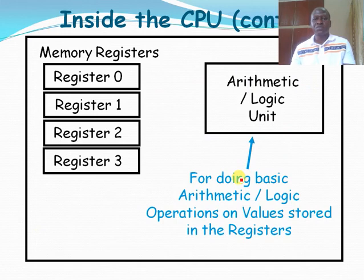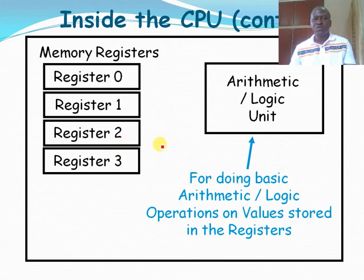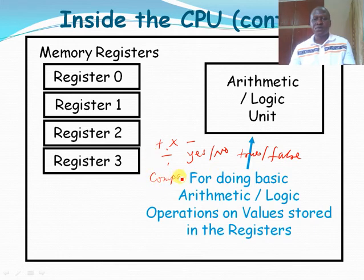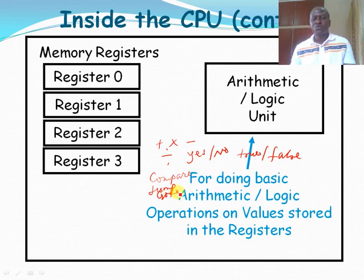The arithmetic and logic unit of a processor helps it perform arithmetic calculations such as addition, multiplication, subtraction, and division. It also carries out logical operations that result in yes/no or true/false outcomes, as well as comparison operations, branching operations such as jump or go-to, and so on.